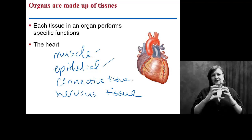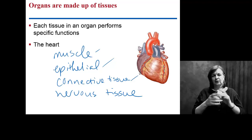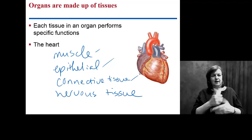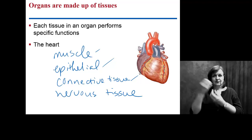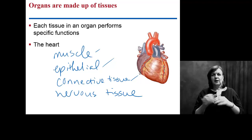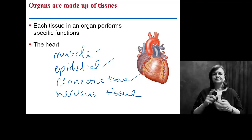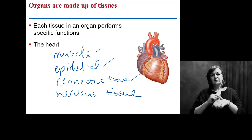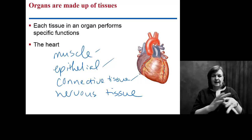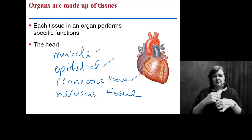The connective tissue is going to help the muscles receive the information they need, and also help the heart be elastic and do good contractions. And then the nervous tissue will actually regulate those contractions. So, all of these tissues are going to have to work together to form the heart as an organ.